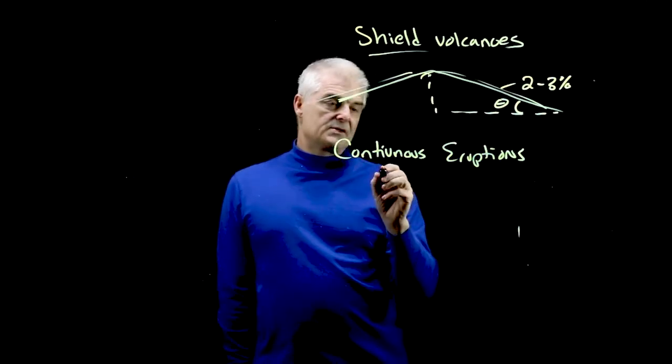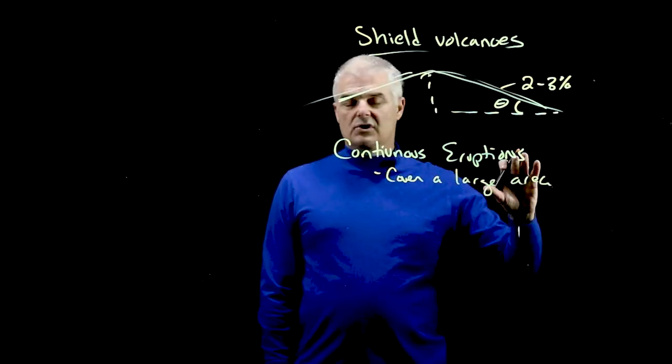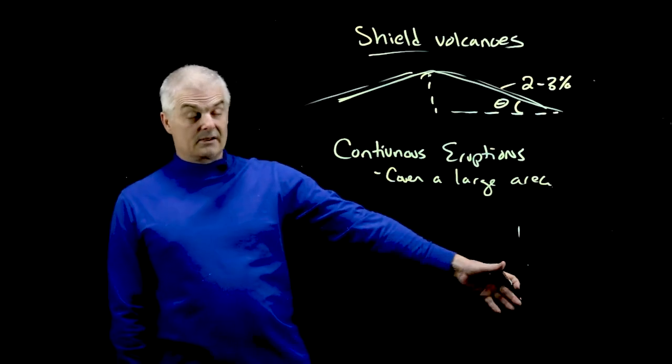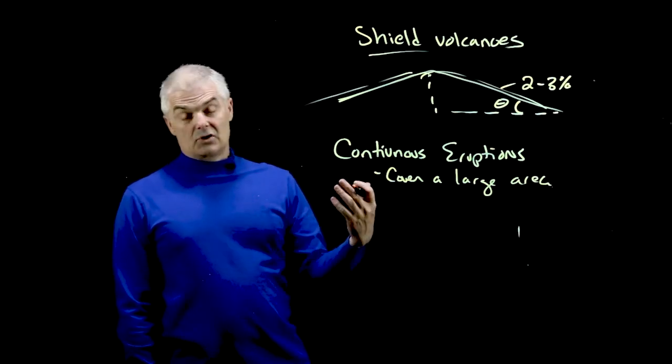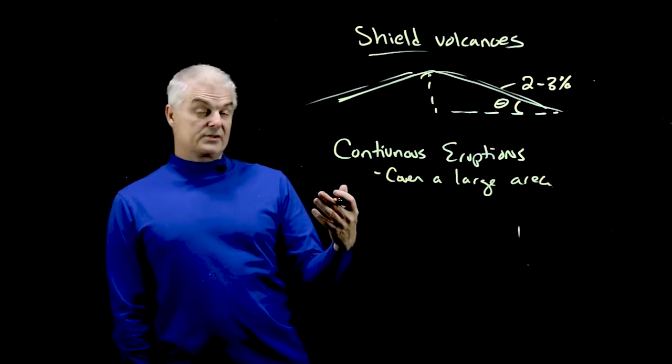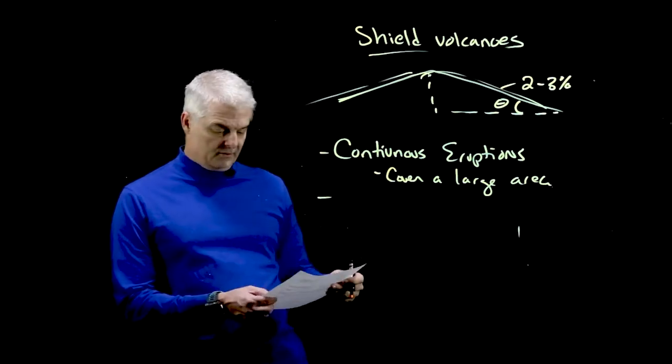And there's a note with these continuous eruptions that can cover a large area. Hawaii, actually the Kilauea on Hawaii, is actually taller or very close to the same height as Mount Everest if you take from the bottom of the ocean.